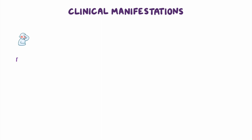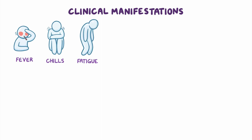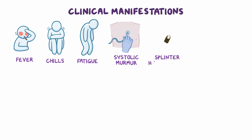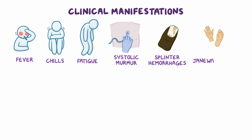The main clinical manifestations of endocarditis often include fever, chills, and fatigue, as well as a new systolic murmur that results from turbulent blood flow past the damaged heart valve. Sometimes, emboli can detach from the valve to float through the bloodstream. The emboli can then lodge under the nail bed, causing splinter hemorrhages that look like black longitudinal streaks underneath the nail, or can lodge in the palms and soles, causing small, painless, flat, and red lesions called Janeway lesions.